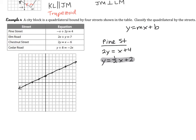For Elm Road, subtracting 2X puts it in slope-intercept form. The Y-intercept is at 0, 7 and the slope is negative 2 over 1, so going down 2 over 1 repeatedly gives us that line.